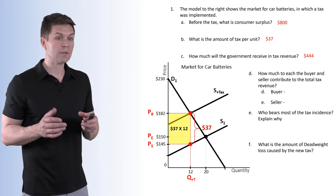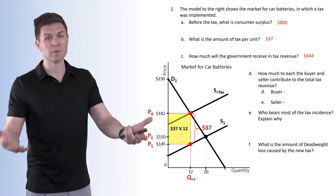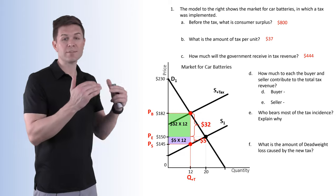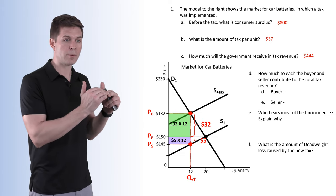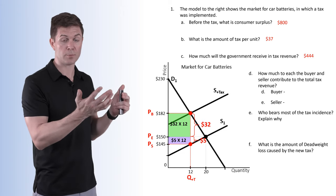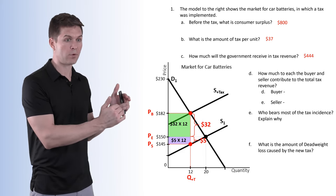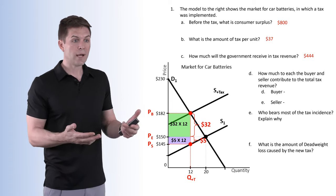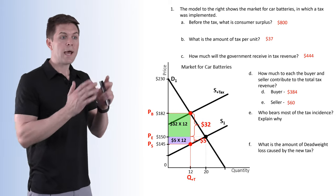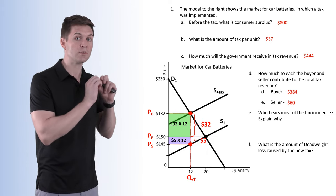How much do each the buyer and the seller contribute to the total tax revenue? The question is asking how much they each contribute to the $444. We separate this by the distance from the original equilibrium price of $150. The buyer is now paying $182, or $32 of the per-unit tax. The seller is now receiving $145, contributing $5 of the $37 tax. So 32 times 12 equals $384 from the buyer, and $5 times 12 equals $60 from the seller.